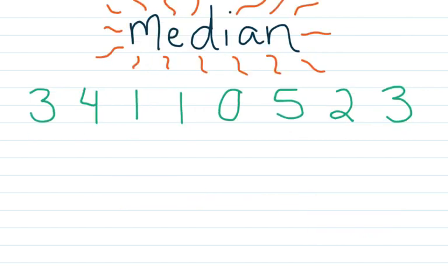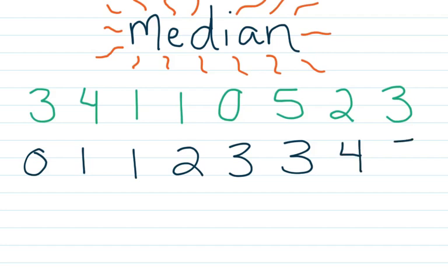Next up on our measures of center is the median. The median requires you to put the data set in order from least to greatest. So I have zero, one, one, two, three, three, four, five. I have put this set in order from the least number, zero, to the greatest number, five.